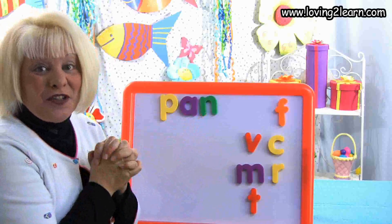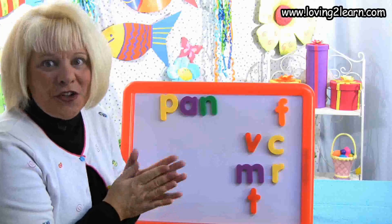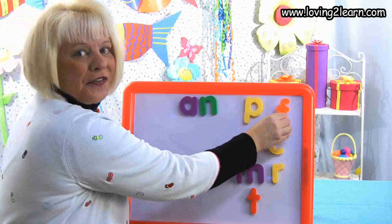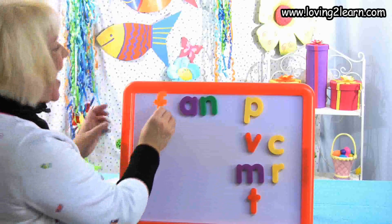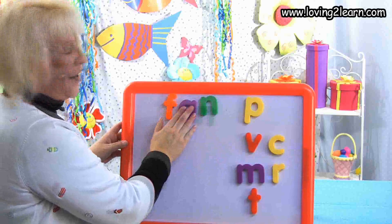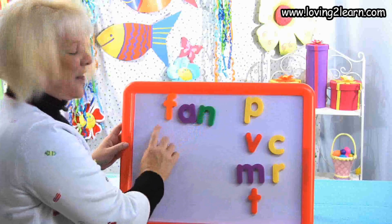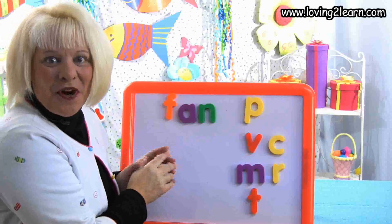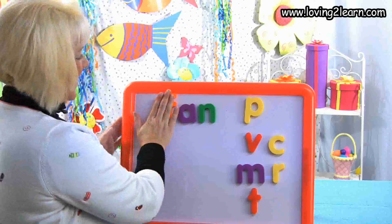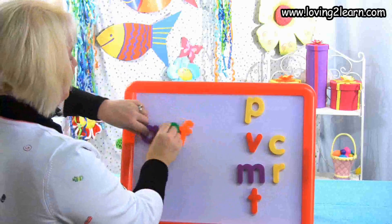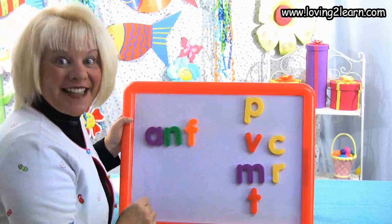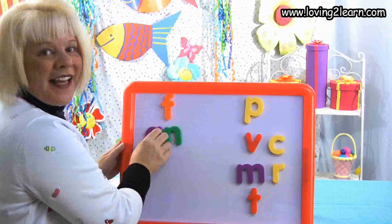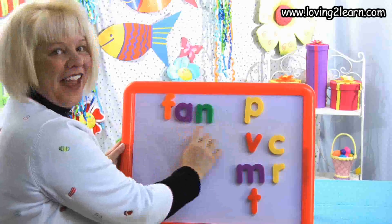I want to make the word fan. What letter should I get? That's right, F. F-F-F. Where do I put it? At the beginning of the word: F-A-N. There's that word fan, F-A-N. What chunk is in the word fan? AN. I'm mixing it up. Let's put the word fan together: F-A-N. Fan, fan.